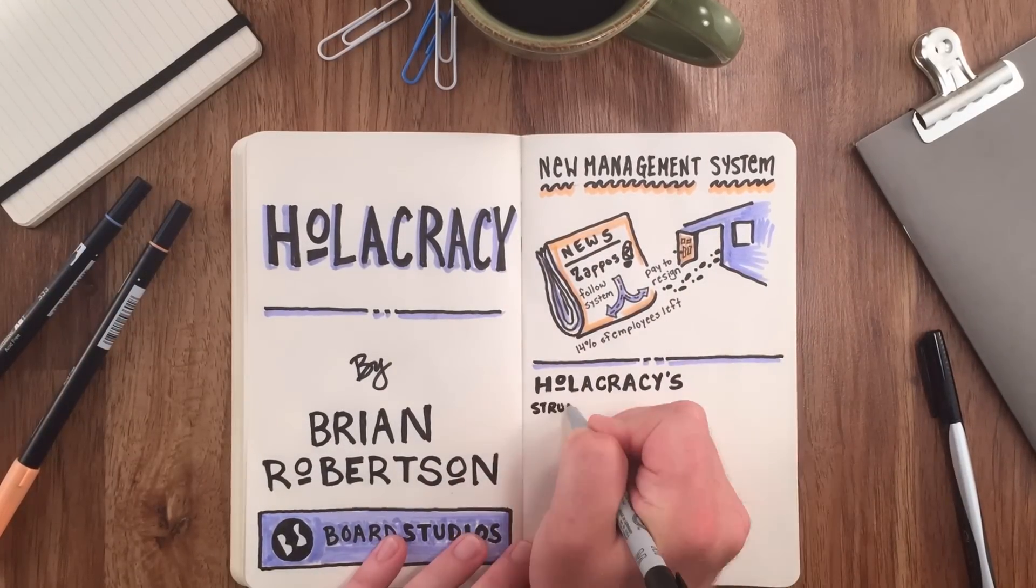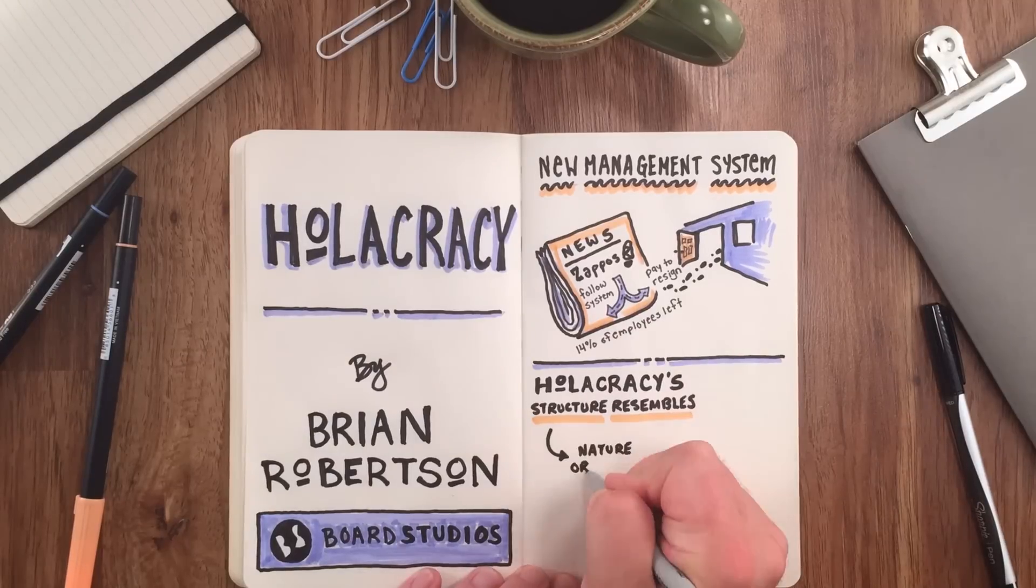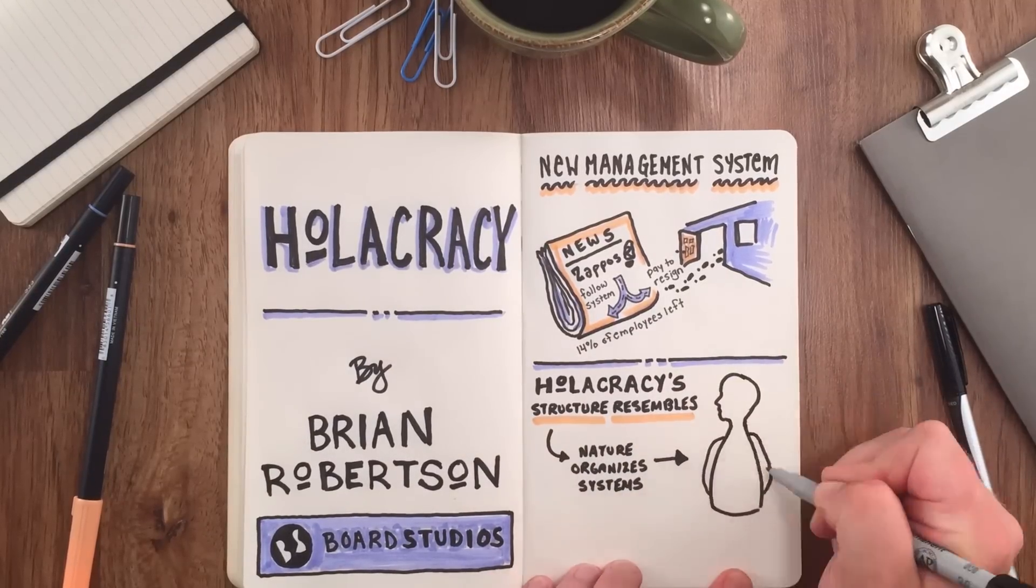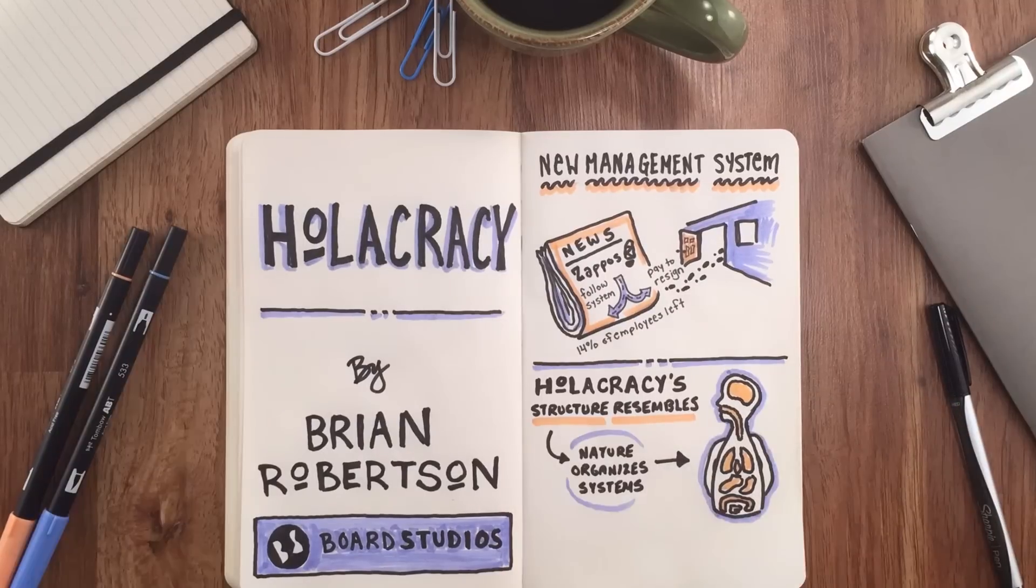The Holacracy structure resembles how nature organizes systems like the human body, where cells function autonomously within organs, which in turn function autonomously within the body.